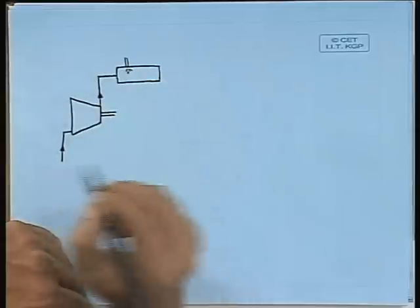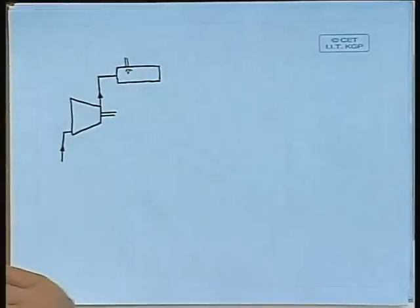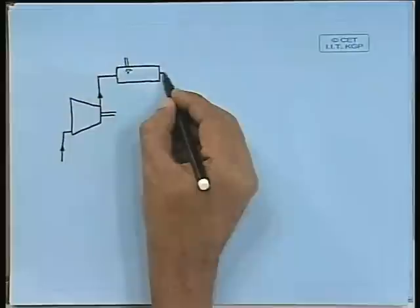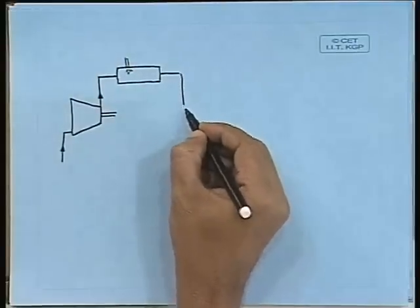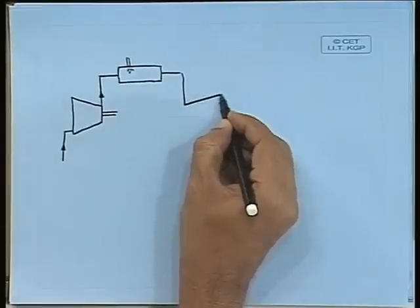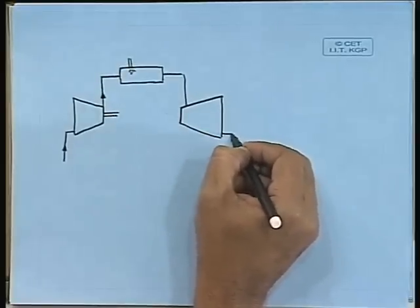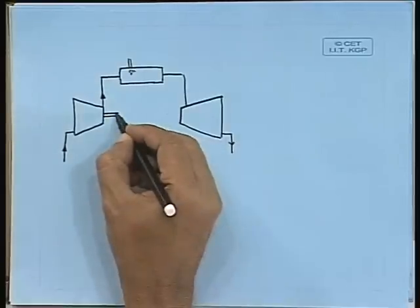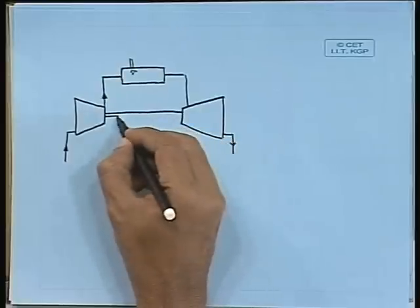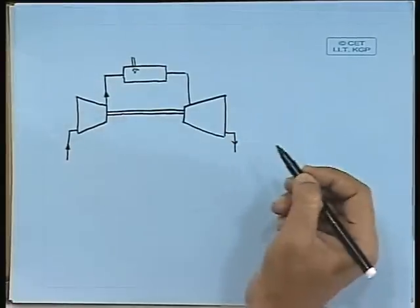The high pressure and high temperature air is sent to a combustion chamber where fuel — liquid fuel — is injected. Combustion takes place, causing a further rise in temperature of the gas. This high temperature gas is then sent to a turbine, where it expands while passing through the blade passages.